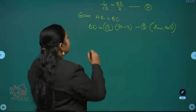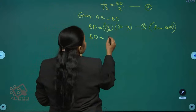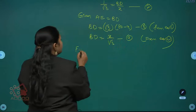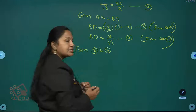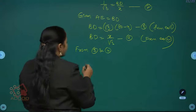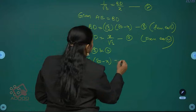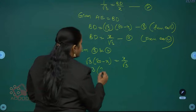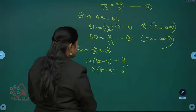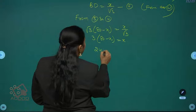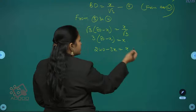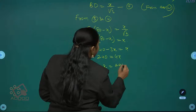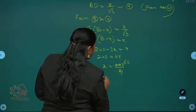From equation 2, BD equals x by root 3. From equations 3 and 4, LHS parts are equal so equate RHS: root 3 into (80 minus x) equals x by root 3. Transposing root 3 to LHS: root 3 into root 3 equals 3, so 3 into (80 minus x) equals x. That gives 240 minus 3x equals x. Transposing: 240 equals 3x plus x equals 4x. Therefore x equals 240 by 4, so x equals 60 meters.